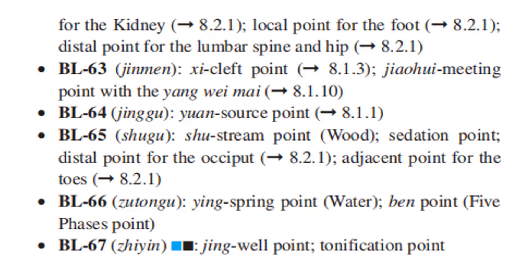Bladder 63 is the Cleft Point and the Jiao Wei meeting point for the Yang Qiao Mai. Bladder 64 is the Yuan Source Point. Bladder 65 is the Shu Stream Point, Wood point, and the sedation point. It is also the distal point for the occiput.